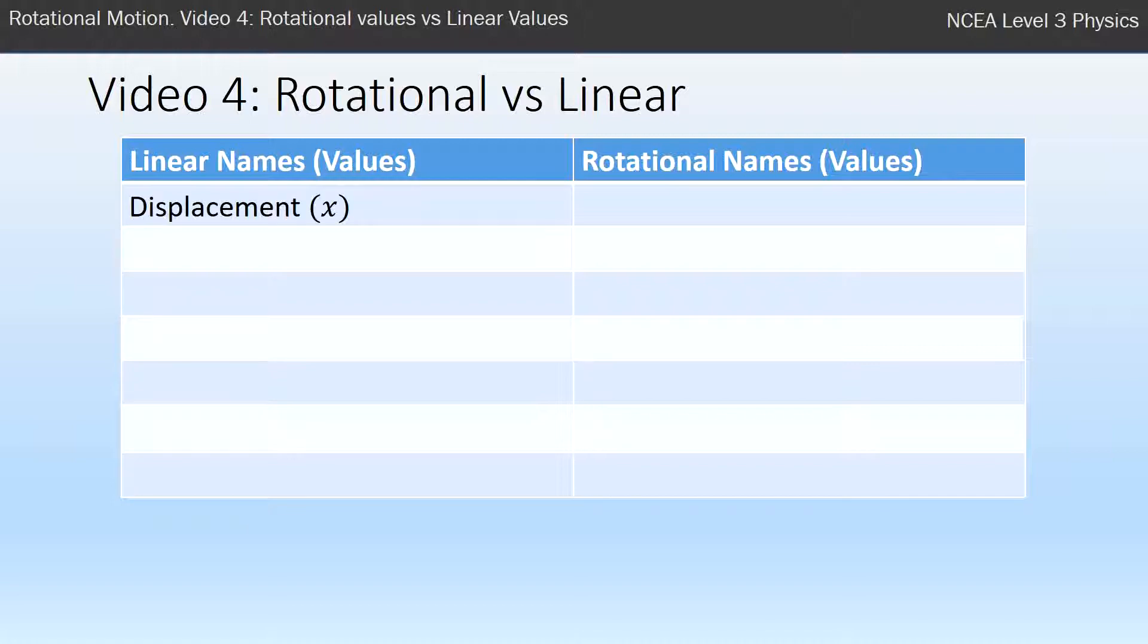Displacement, which is a change in position of an object that usually is moving in a straight line. In rotational we're now dealing with the angle, so what angle has this object moved through as opposed to what is it being displaced by. So they're relatively equivalent.